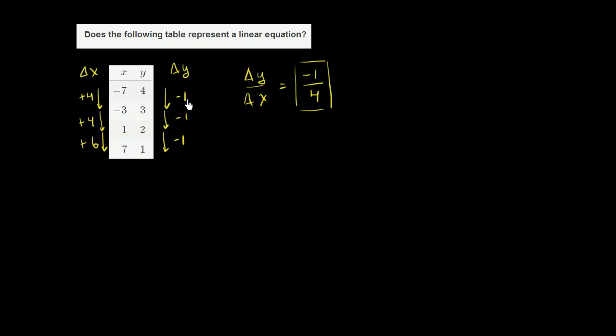Let me clear this up. So just between these last two points over here, in magenta, our change in y is negative 1, and our change in x is 6. So we have a different rate of change of y with respect to x.